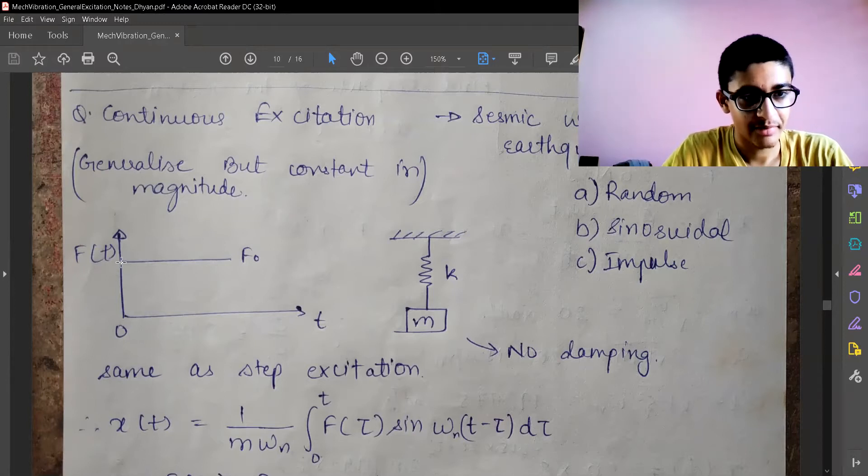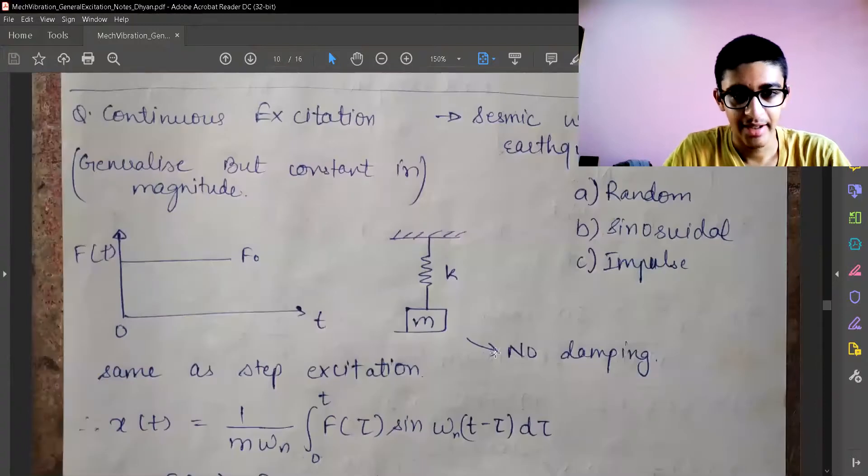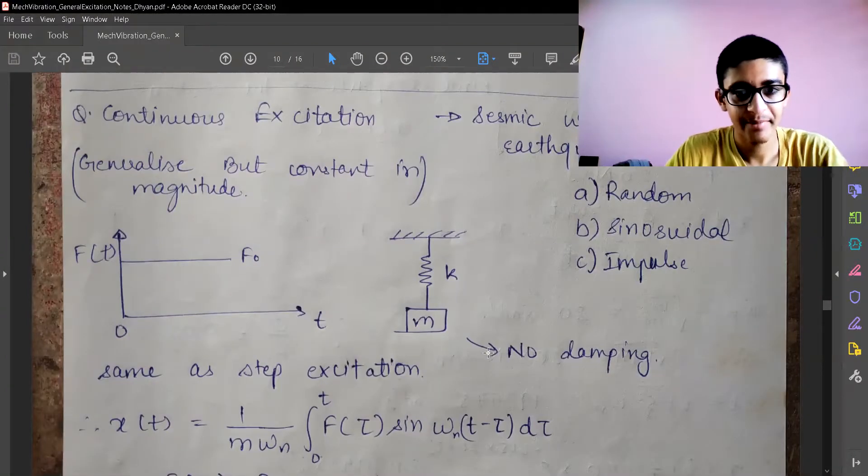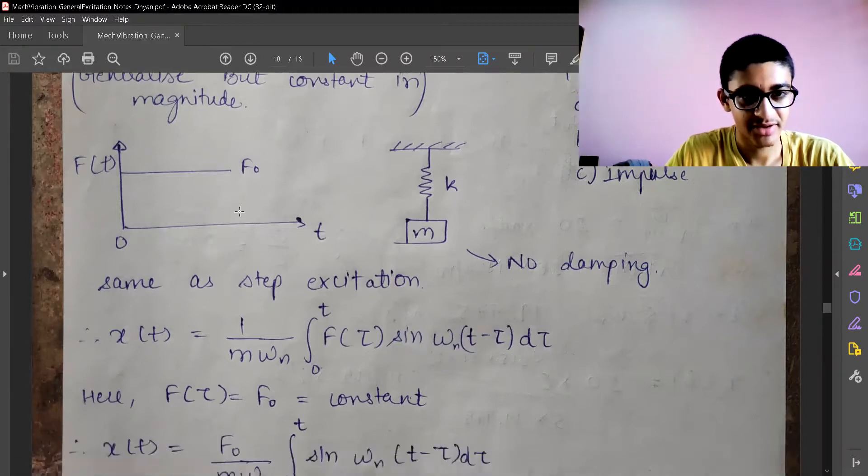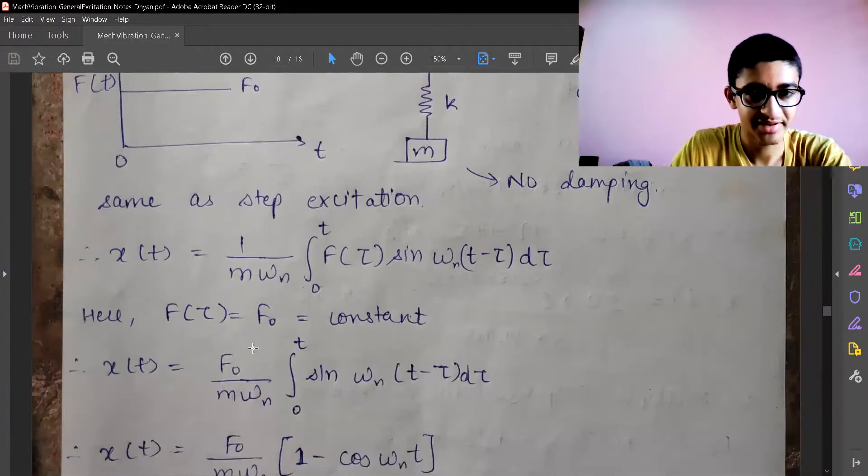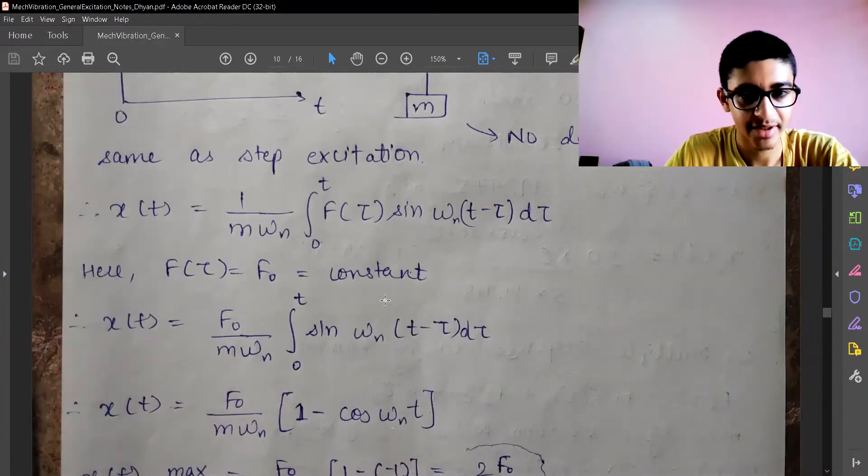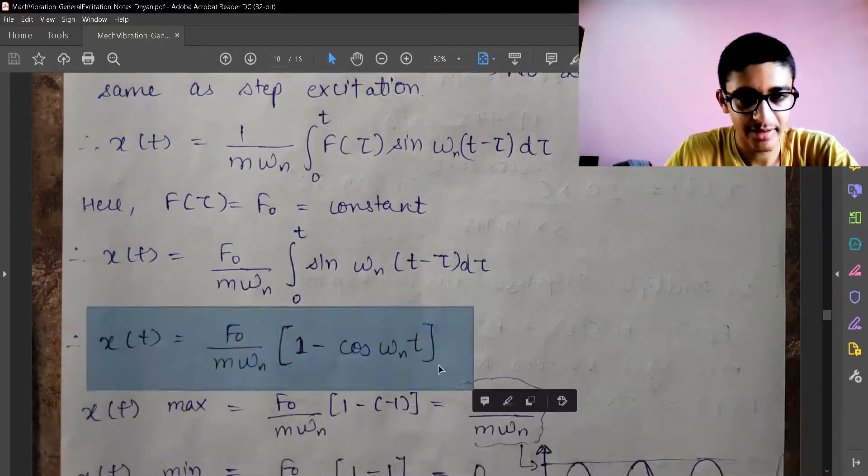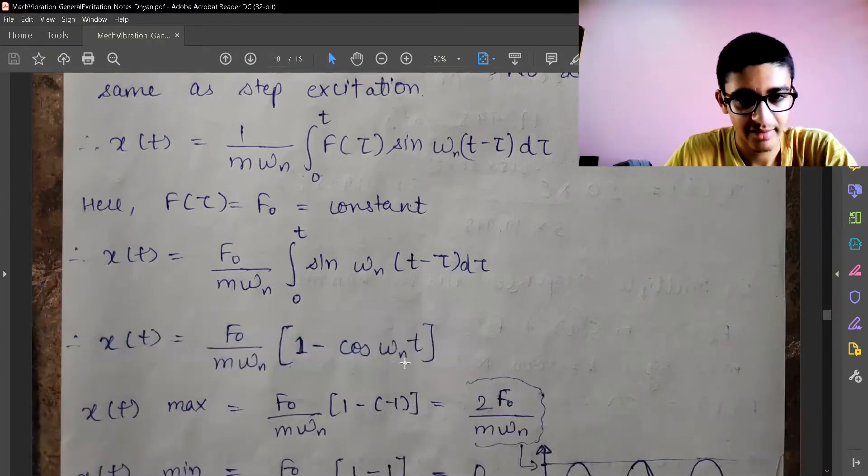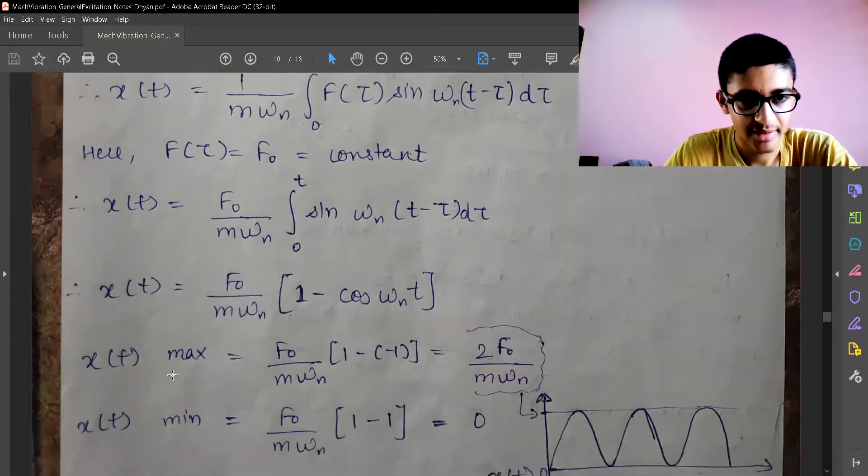We can generalize it, but the magnitude remains constant, and as of now we are taking an undamped system. This is how the function is - the response to general excitation where F of tau is going to be a constant F₀, and we are using convolution integral concept. We have the response x(t) in terms of F₀, m, omega_n, and xn.